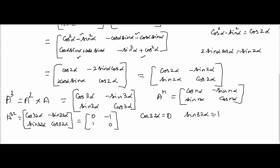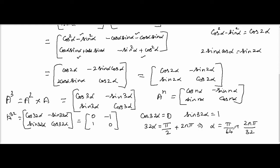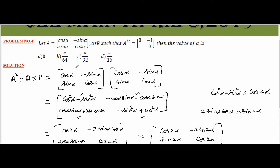cosθ = 0 and sinθ = 1 when θ = π/2. So 32α = π/2. Since cosine and sine are periodic functions with period 2π, we have 32α = π/2 + 2nπ. Therefore α = π/64 + 2nπ/32, and the first value is π/64.